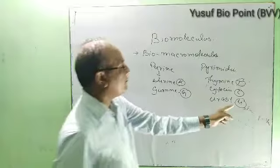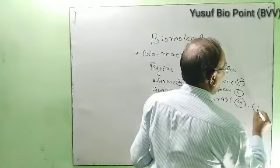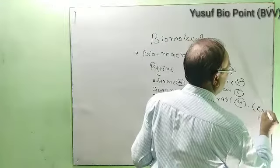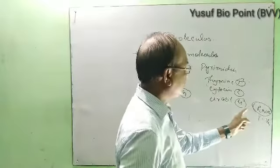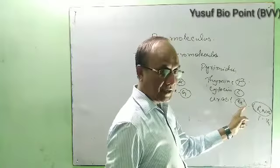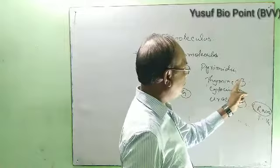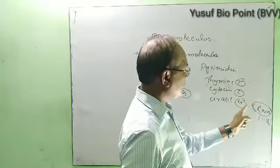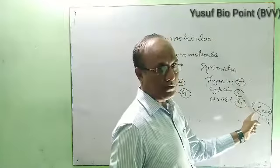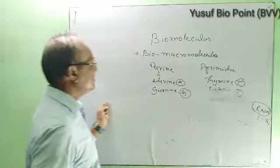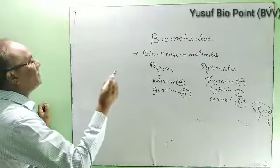Uracil is found in ribonucleic acid, not in DNA. In RNA, uracil is found in place of thymine. Now let us look at the structure of DNA.